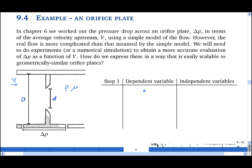We start by writing down the dependent variable, which is Δp. That's what you want to measure. Then we write down the independent variables: the properties of the fluid ρ and its viscosity μ, the speed of the fluid v, the size of the pipe, and the size of the orifice. Both of those are diameters.